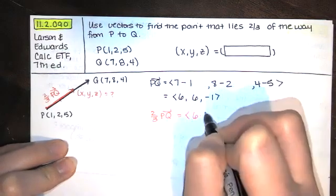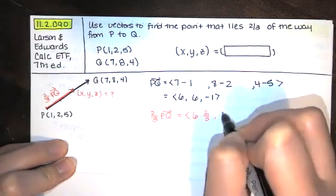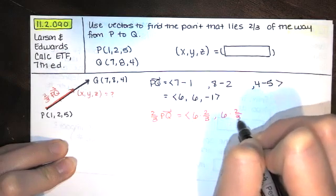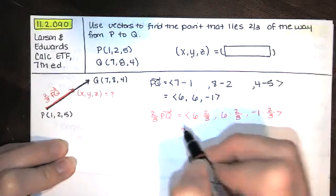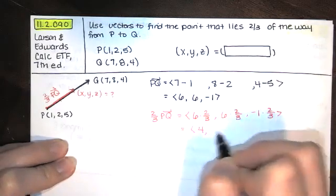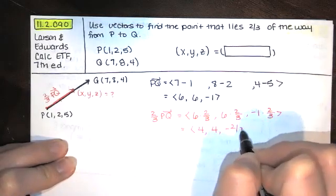And the way you do that is you just take each of the components and multiply by two-thirds. And two-thirds of 6 is 4. And so we're here.